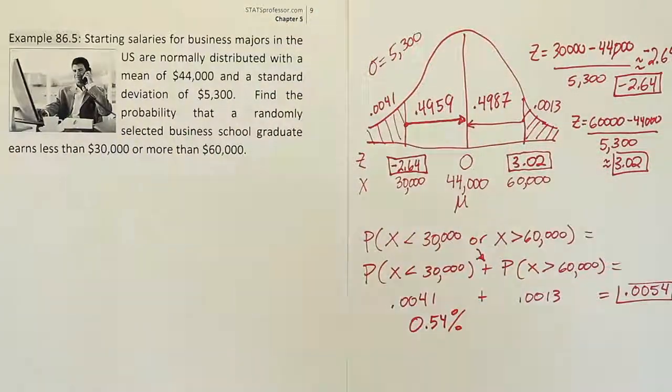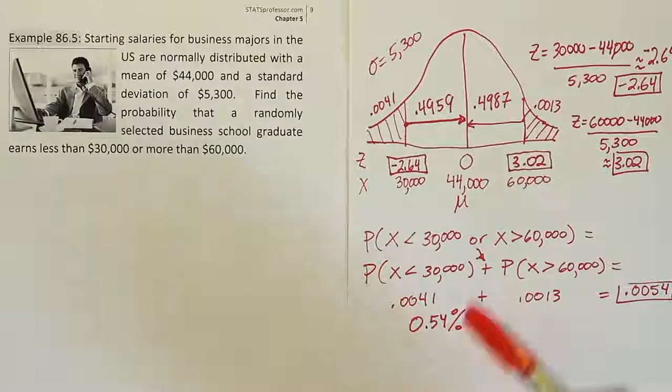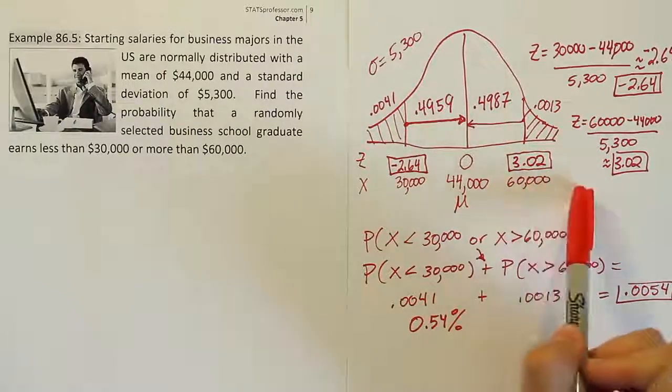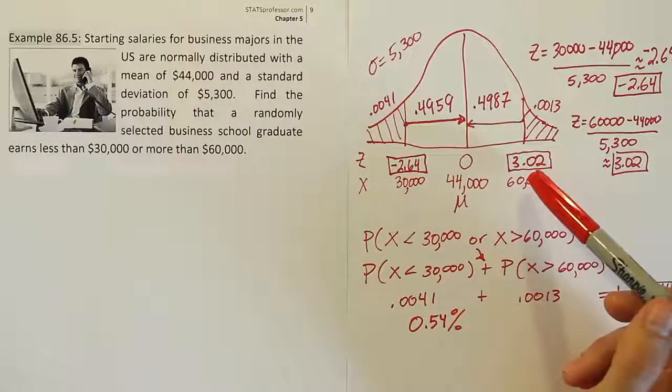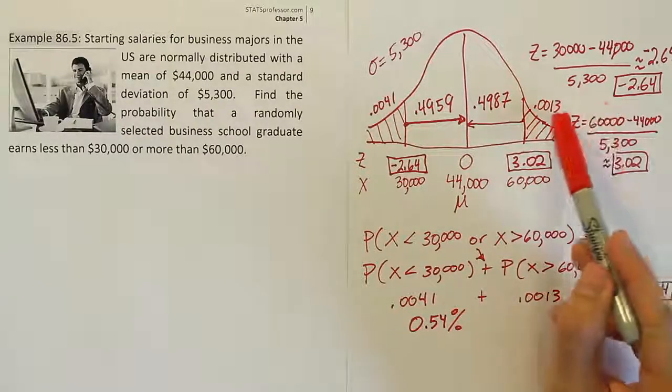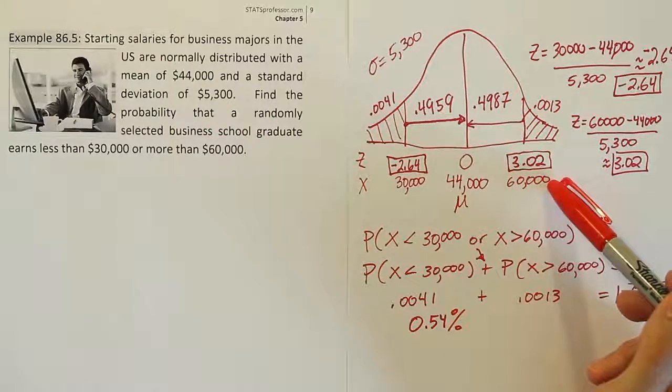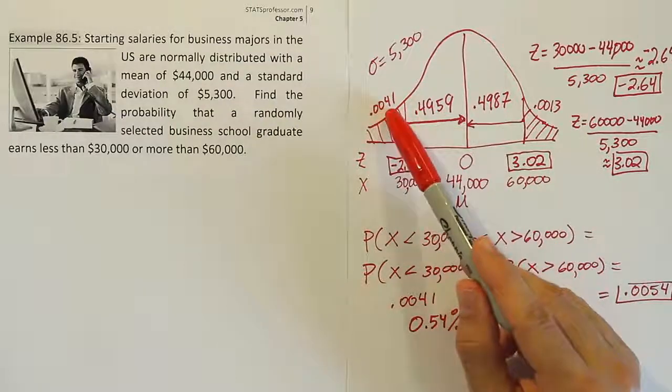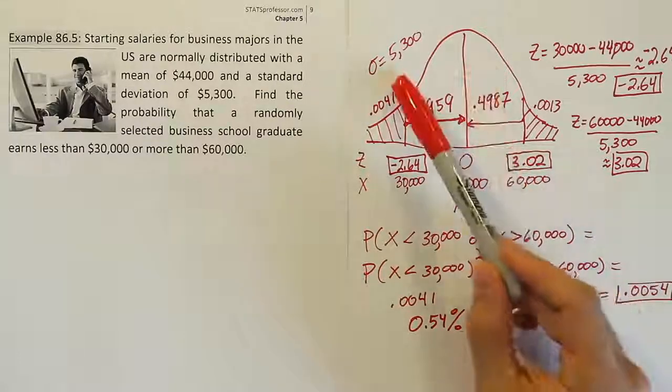0.54%. So there's a very small probability, about half of 1% chance that people working in the business world with a business degree, their starting salaries would be higher than 60,000 or lower than 30,000. So this gives graduates with business degrees a certain idea of where their starting salary should be. Very few of them will be above 60,000. Only 0.13% will earn more than 60,000 first graduating with their business degree with a bachelor's. And then for the lower end, only 0.41% of them will start at a salary lower than 30,000, assuming this mean and standard deviation are, in fact, correct.